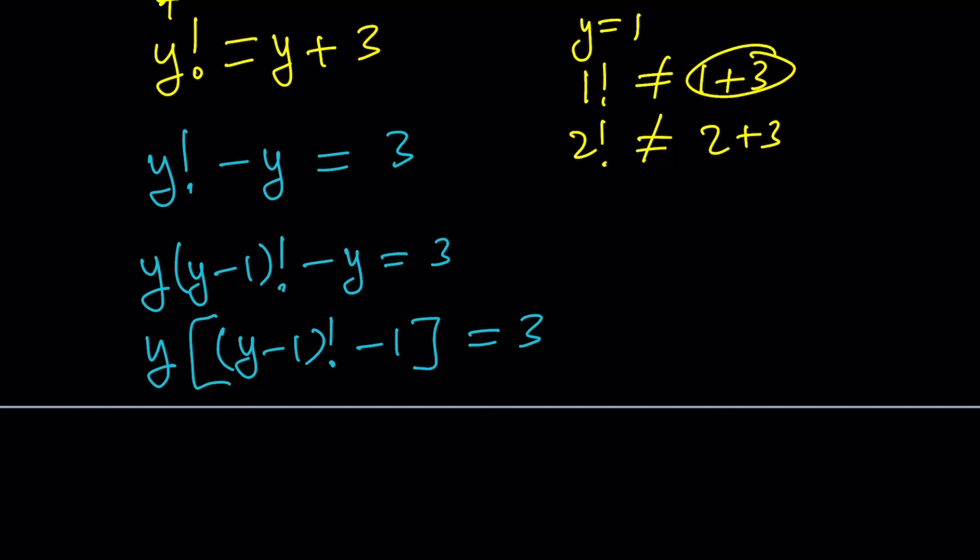Awesome. Now, what is that supposed to mean? Either y or y minus 1 factorial minus 1 must be a factor of 3. In other words, one of these factors must divide 3, right?